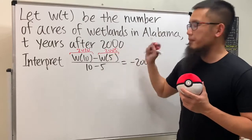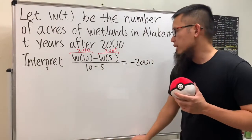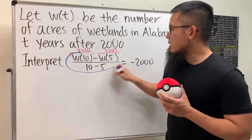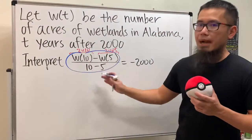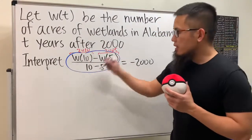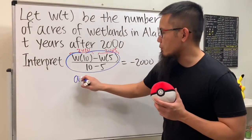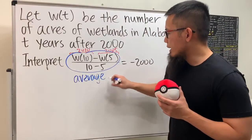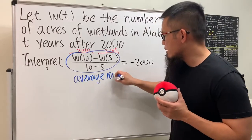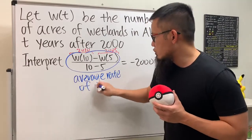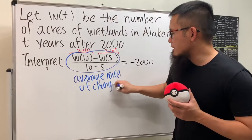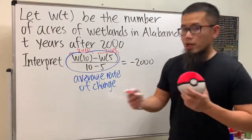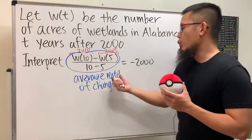Now if you look at the whole expression: w of 10 minus w of 5, over 10 minus 5 — this is the average rate of change formula. Just write this down: average rate of change formula, namely ARC.